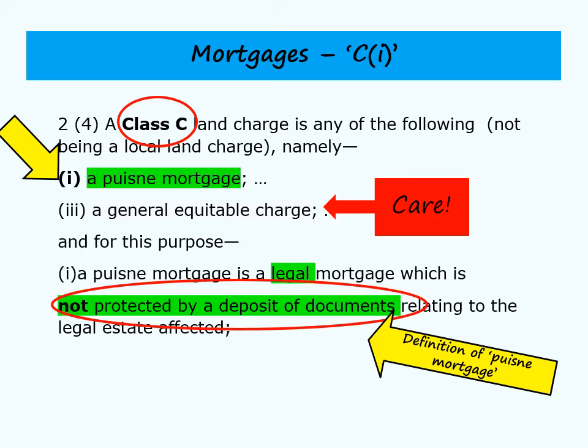While we have section 2-4 in front of us, setting out class C land charges, look at C3 — indicated by the red arrow — because you might think the wording suggests this is a very wide catch-all provision. In a way it is, but I want to confirm that it only relates to charges in relation to the protection for payment of money. It doesn't include any other general type of property rights — in other words, it doesn't mop up every other type of equitable proprietary right which isn't specifically listed in section 2.